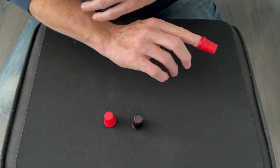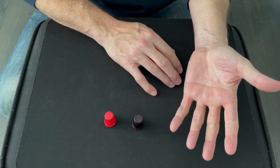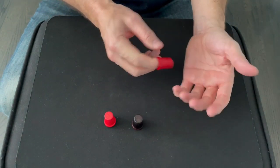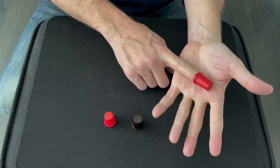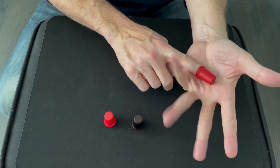Now this next vanish definitely takes a lot of practice, but it is well worth it. It will blow their minds if you execute it perfectly. So for this one, I purposely close my fingers then reopen them and close them again, because it's a retention vanish and I want them to see the thimble is in the hand.